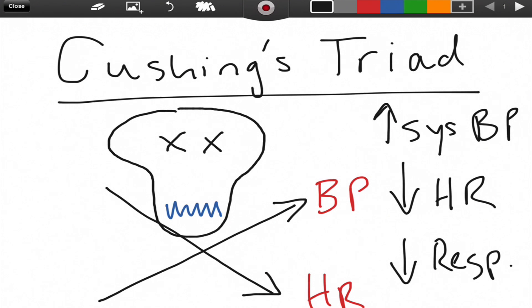Now with Cushing's Triad you can also see irregular respiratory patterns. It's not just someone who's breathing slow. And the key thing to keep in mind here is that Cushing's Triad is the opposite of what someone who's in shock is experiencing.